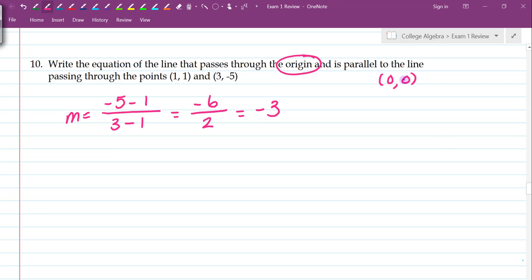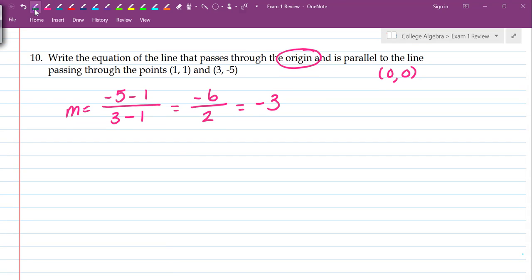Now that I have a point and now that I have a slope, I can easily write an equation of a line. So our point slope formula is Y minus Y1 is equal to M times X minus X1.